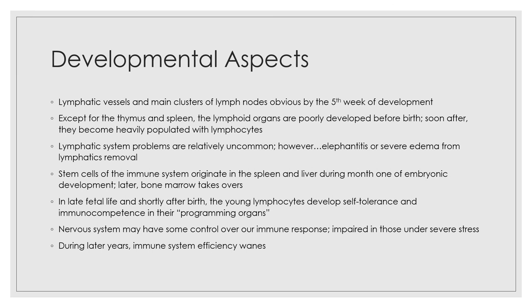Looking at developmental aspects of the lymphatic system: lymphatic vessels and main clusters of lymph nodes are obvious by the fifth week of development. Except for the thymus and spleen, lymphoid organs are poorly developed before birth, but soon after become heavily populated with lymphocytes. Stem cells of the immune system originate in the spleen and liver during early embryonic development, with bone marrow taking over later. In late fetal life and shortly after birth, young lymphocytes develop self-tolerance and immunocompetence. The nervous system may have some control over the immune response, which is impaired in those under severe stress, and during later years immune system efficiency begins to wane.